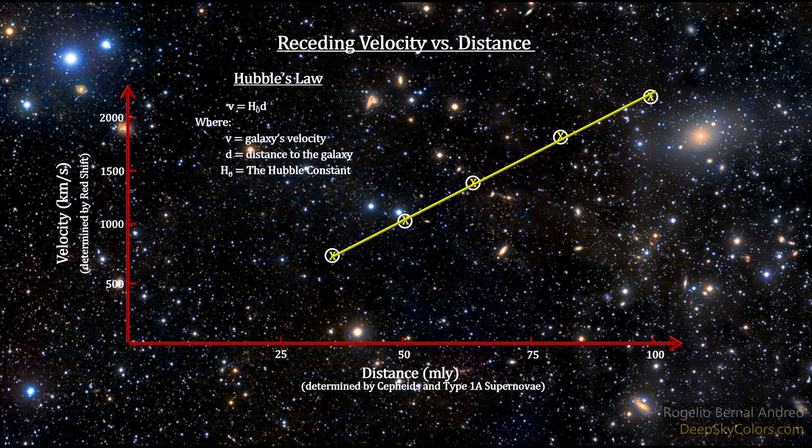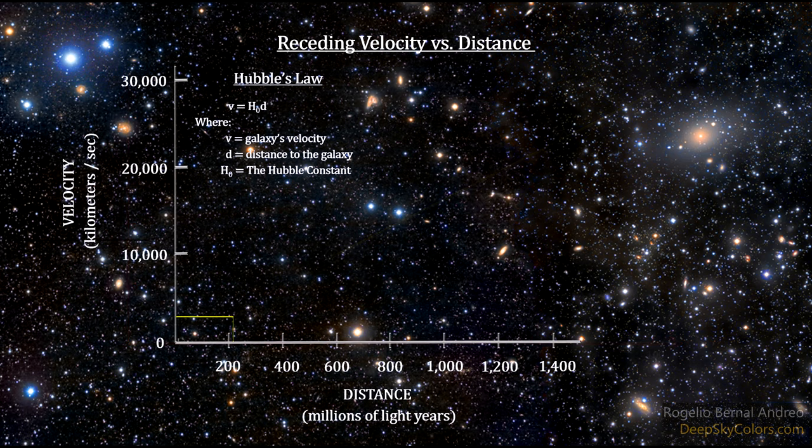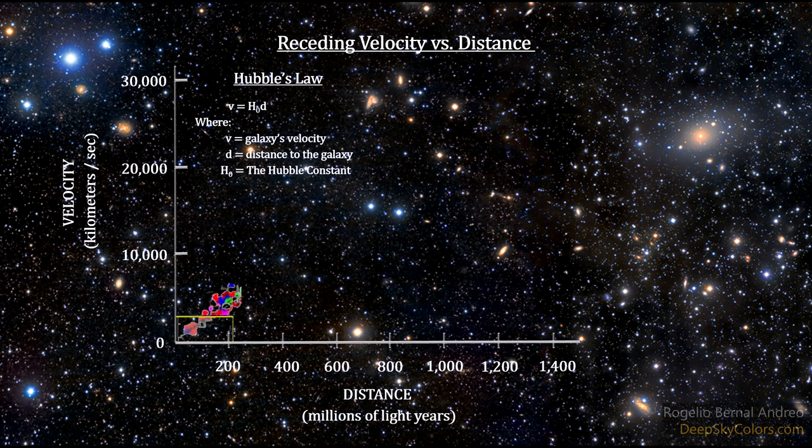This gives us a new rung on our cosmic distance ladder called redshift. The accuracy of this rung depends entirely on the value of the Hubble constant. That's why it's one of the most studied numbers in astronomy and cosmology.